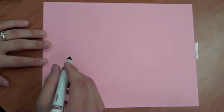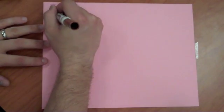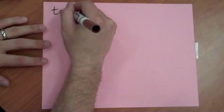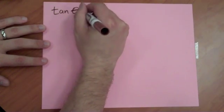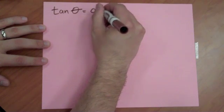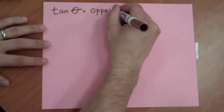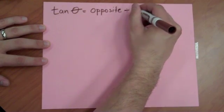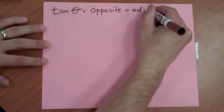I want to show you how we can use a very simple trigonometric function called tangent to calculate the altitude at apogee of our water bottle rockets. We're going to use a really simple formula: tangent of theta equals opposite divided by adjacent.